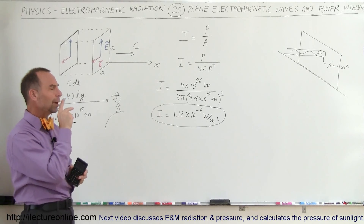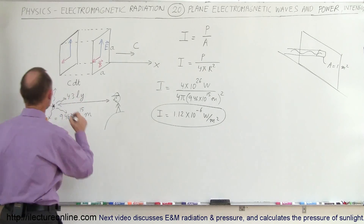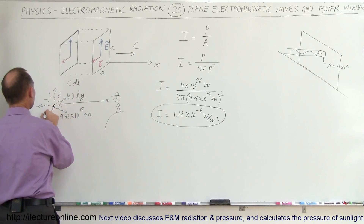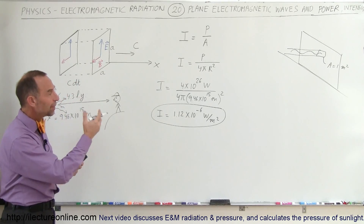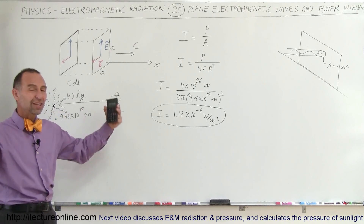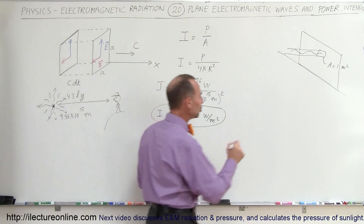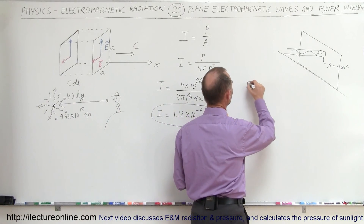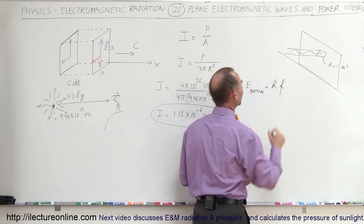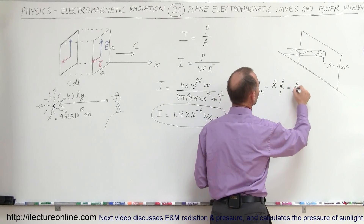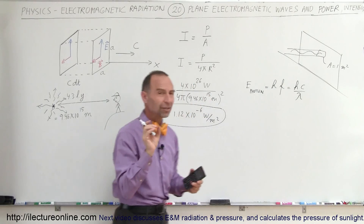Another way to look at electromagnetic radiation is that it's made up of photons. Photons are streaming away from any light source or electromagnetic radiation source. If the intensity is that many watts per square meter, how many photons are we receiving on every square meter of the Earth from Alpha Centauri? The energy contained within each photon is equal to Planck's constant times the frequency, which equals Planck's constant times the speed of light divided by the wavelength.